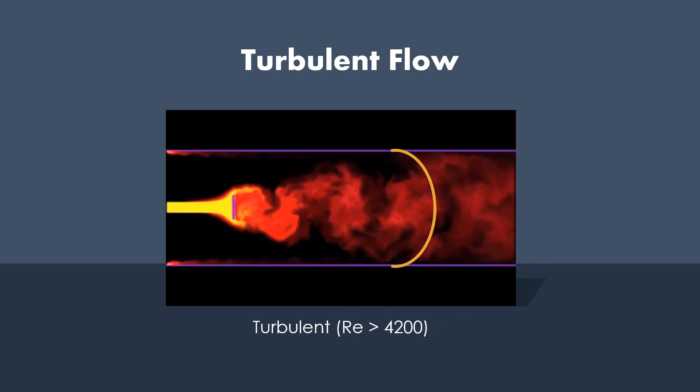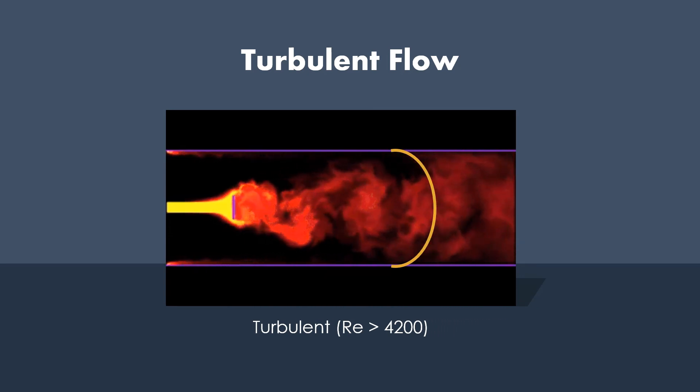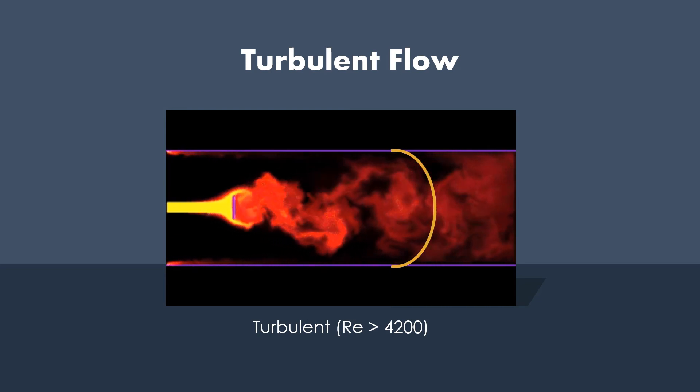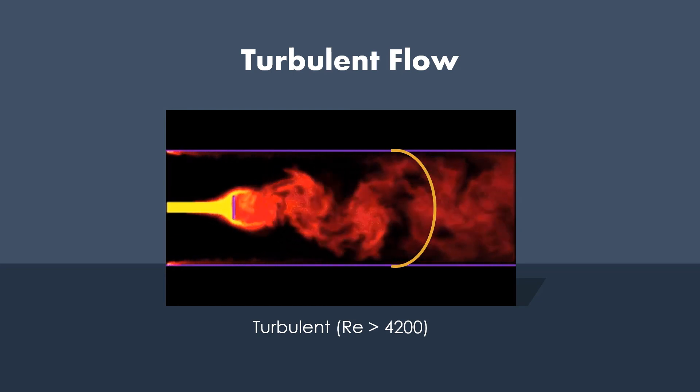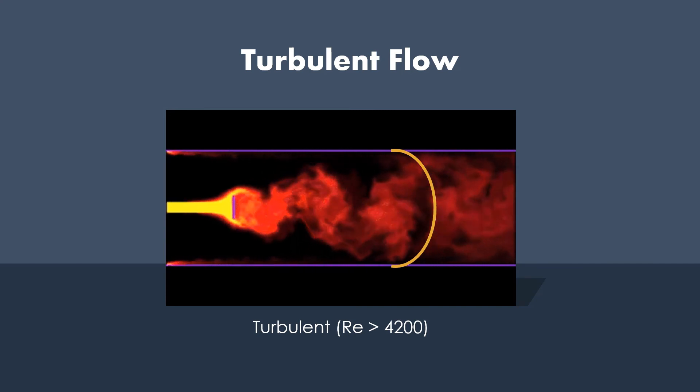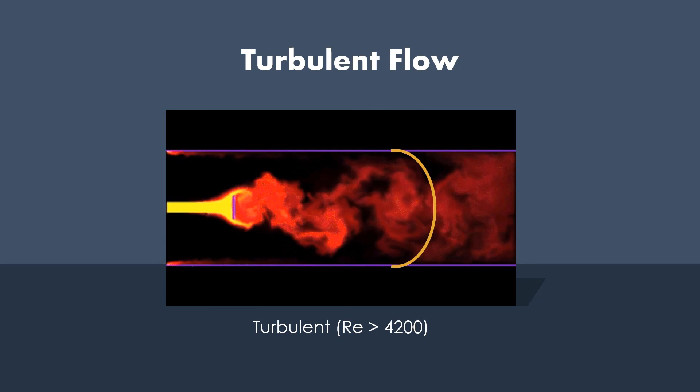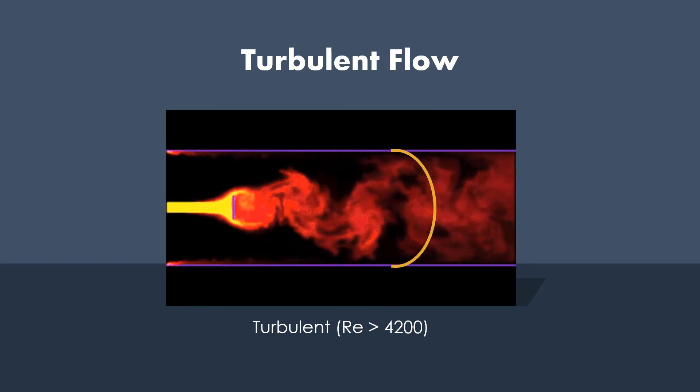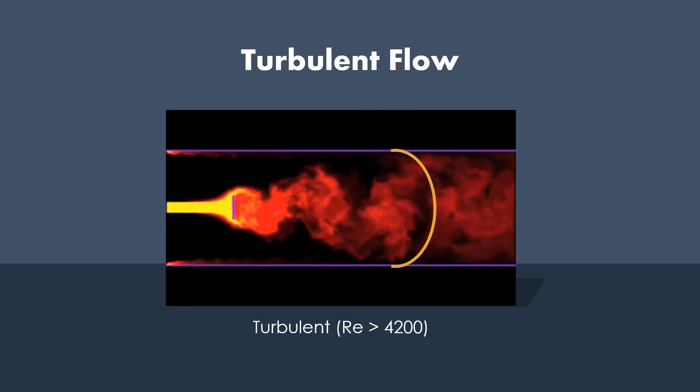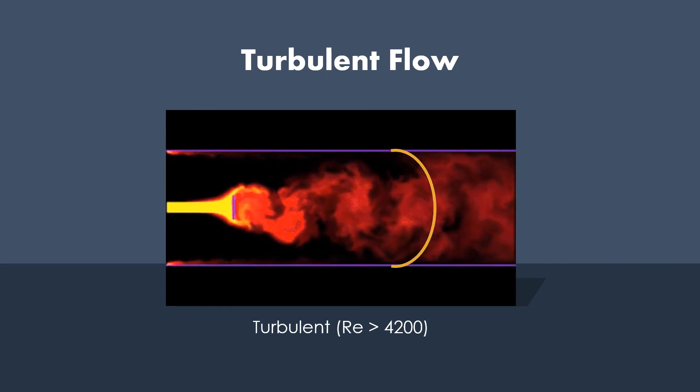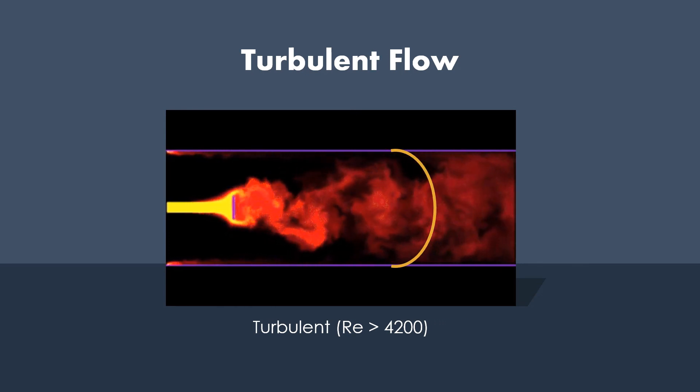And something that I would like to highlight in this training is when you're performing an analysis that requires mixing of the fluid. Let's say you're mixing two chemicals in the pipeline. The turbulent flow is what you want to have and make sure your Reynolds number is greater than 4200.